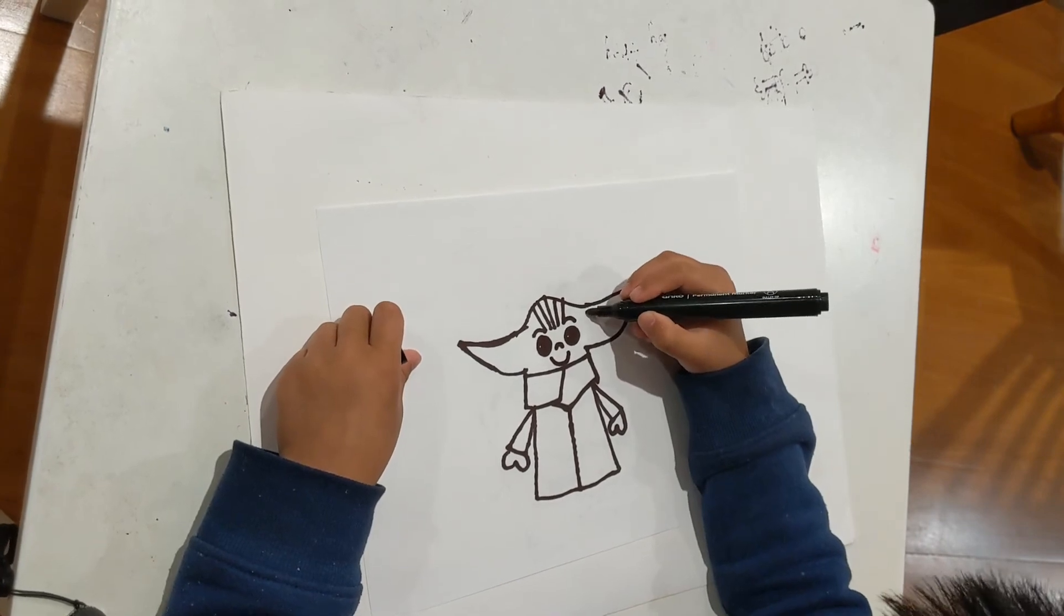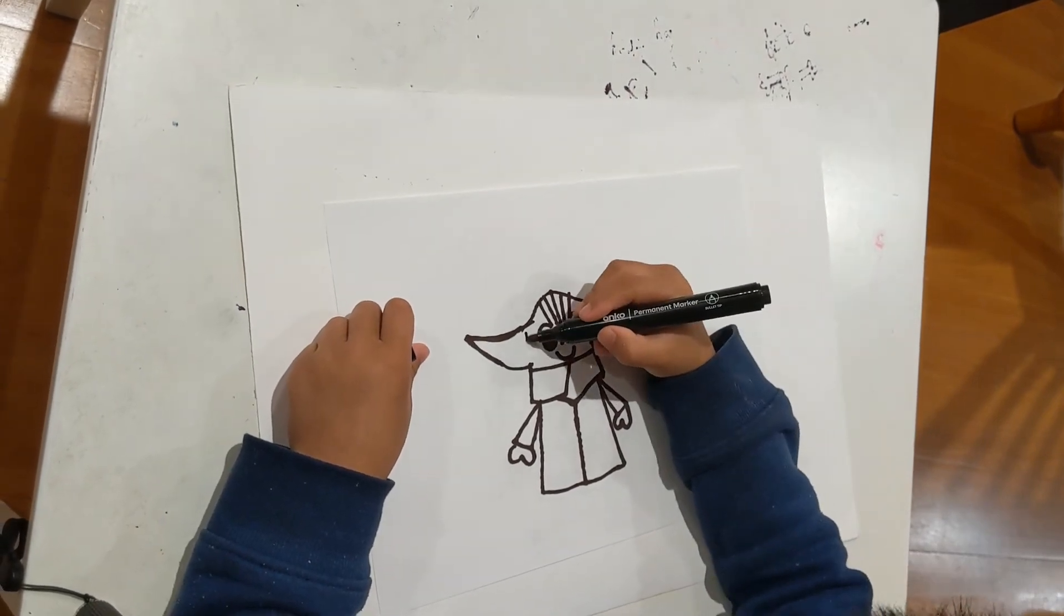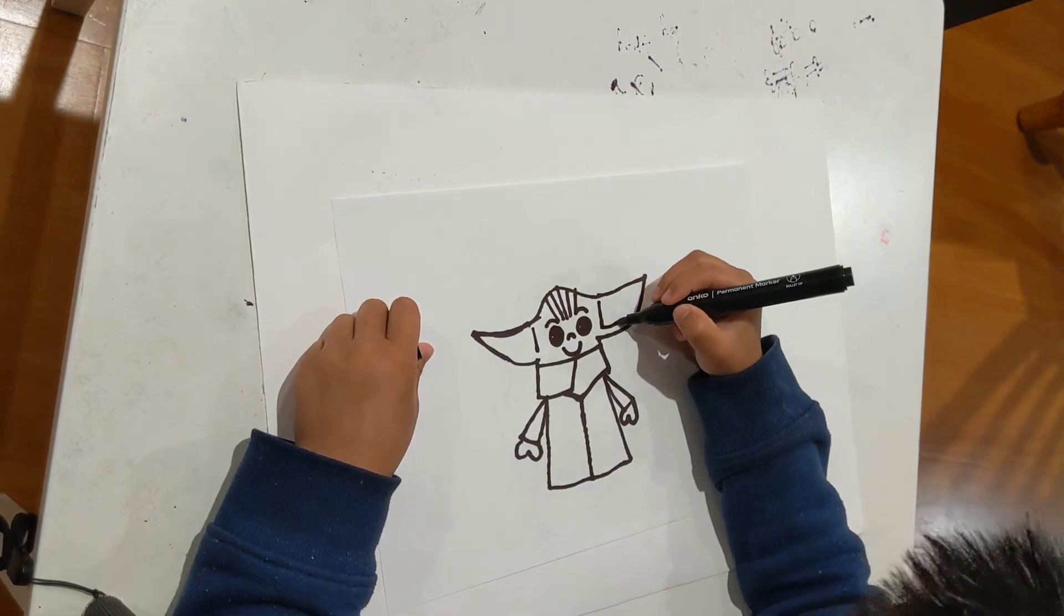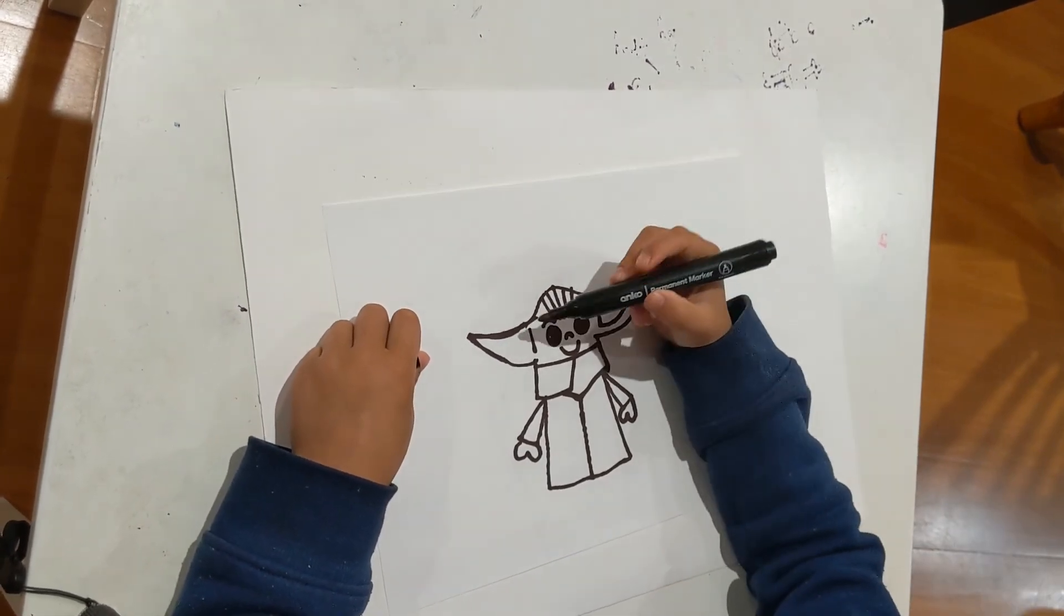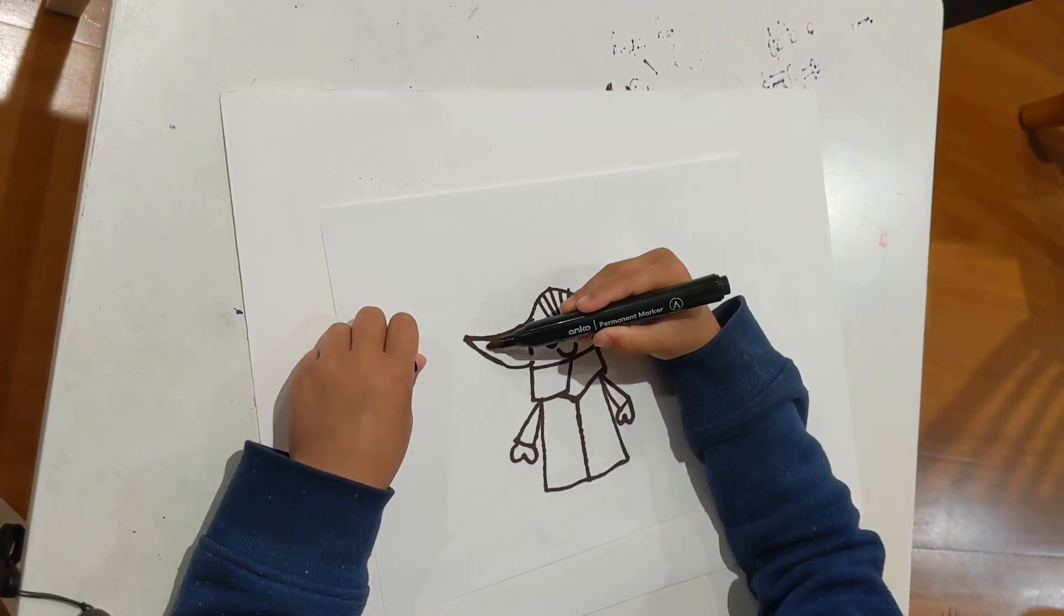Now let's draw a line down on each side, in the same shape, like this. The inside of this ear.